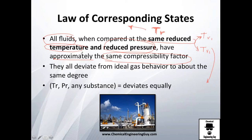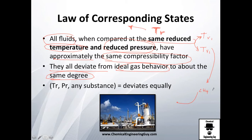Essentially, this law of corresponding states says that all fluids deviate from ideal gas behavior to the same degree. So for example, if you're using CH4 at a given reduced temperature and pressure, you're going to find that NH3 — ammonia — also deviates by the same amount. Look at how they deviate the same.